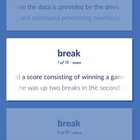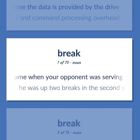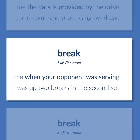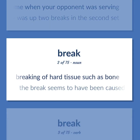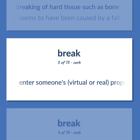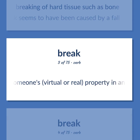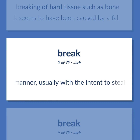Tennis: a score consisting of winning a game when your opponent was serving. He was up two breaks in the second set. Breaking of hard tissue such as bone. The break seems to have been caused by a fall. Enter someone's virtual or real property in an unauthorized manner, usually with the intent to steal or commit a violent act.